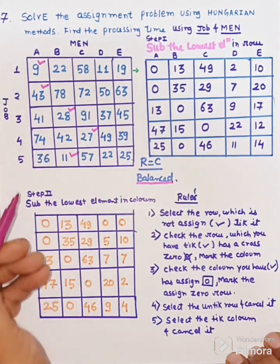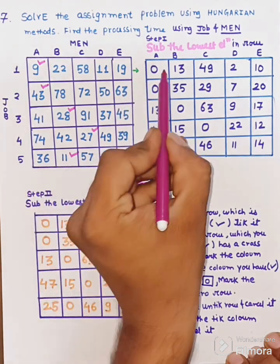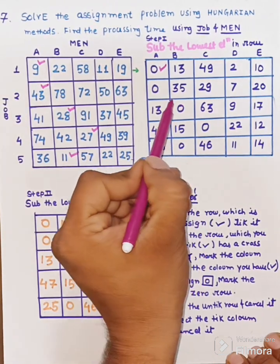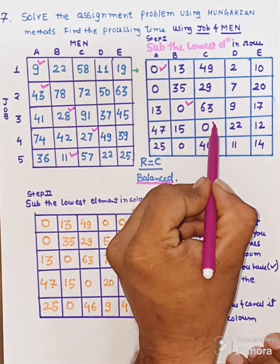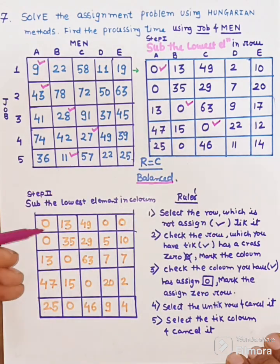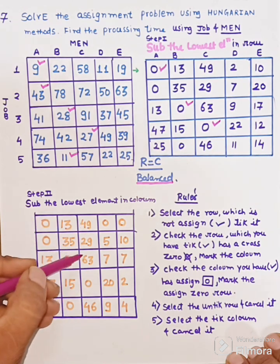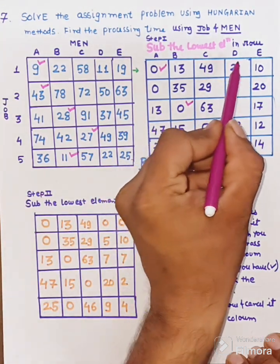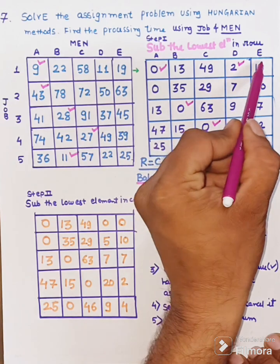The second step is to subtract the lowest element in each column. In the first column, the lowest element is 0, so this column will remain as it is. In the second column, the lowest element is 0. Similarly, in the third column, the lowest element is 0. So the first three columns remain as they are: 0, 0, 13, 47, 25, 13, 35, 0, 15, 0, and 49, 29, 63, 0, 46.